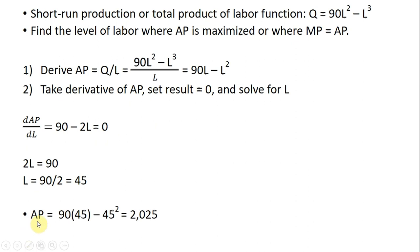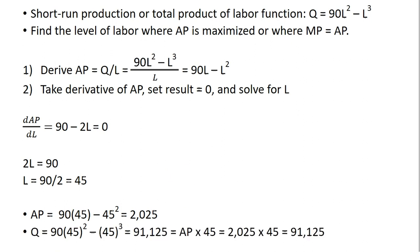We can evaluate average product at 45 units of labor. At 45 units of labor, the average worker produces a little over 2,000 units of output — just plug 45 into the average product equation. We could also plug 45 into the total product of labor function to see total output, and we get a little over 91,000. Alternatively, we can find total output at 45 workers by multiplying 45 by the average product. In either case, we get the same answer.